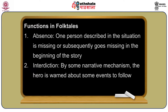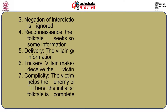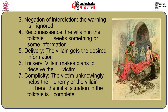The third function is 'negation of interdiction' — the warning is ignored. The fourth function is 'reconnaissance,' where the villain seeks something or some information. The fifth is 'delivery' — the villain gets the desired information. The sixth is 'trickery,' where the villain makes plans to deceive the victim. The seventh is 'complicity,' where the victim unknowingly helps the enemy or villain, not knowing he is falling into the trap laid down by the villain. These seven functions are used to describe the initial situation in the folk tale.